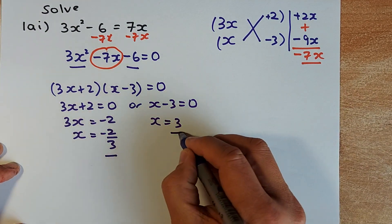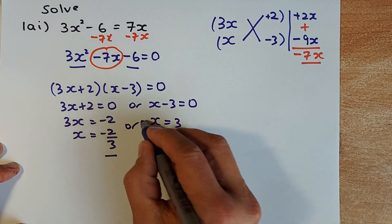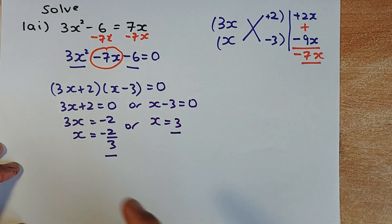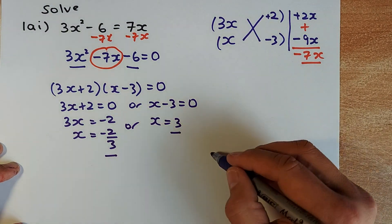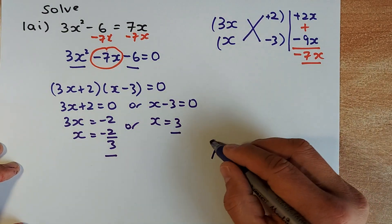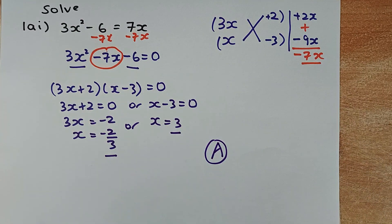So that's the answer — two answers: x = −2/3 or x = 3. And that will be achieved in NCEA Level 2.